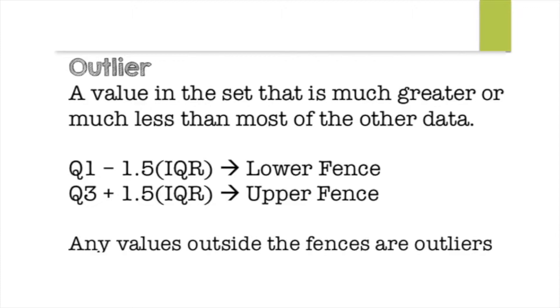Alright, so first let's start out with outliers. An outlier is a value in the set that is much greater or much less than most of the other data, and that's the number that ends up what's called skewing the data.